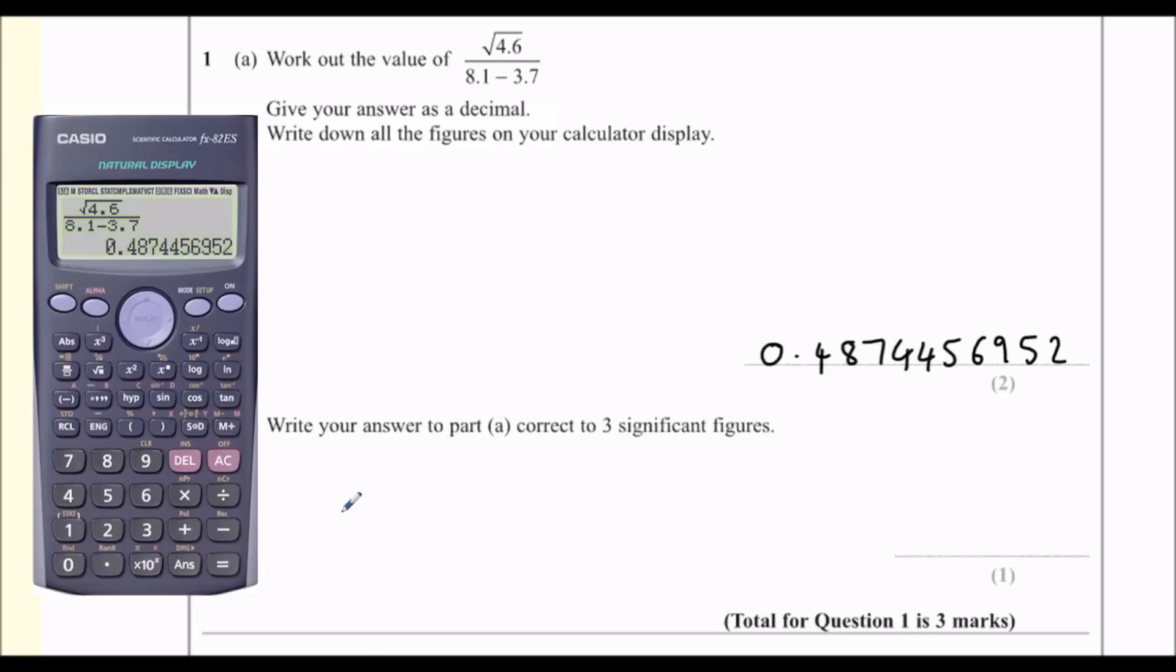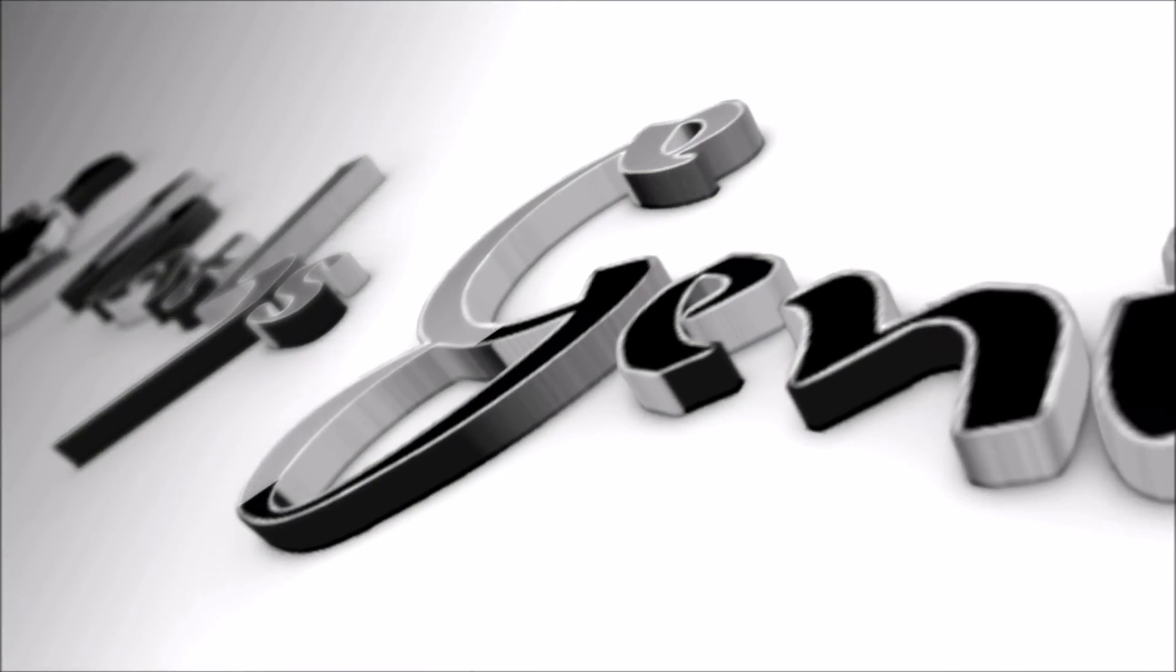Significant figures start from the first non-zero number, so that's this four here, and then one, two, three. The next number's a four, so it's not going to push it up, so it's 0.487. That's what we're going to do.